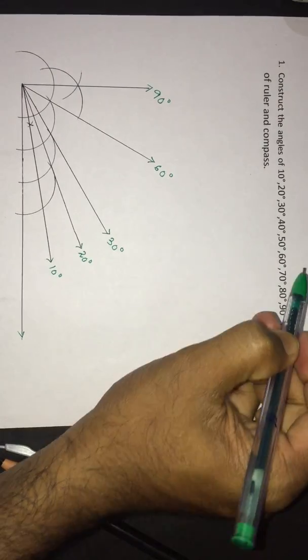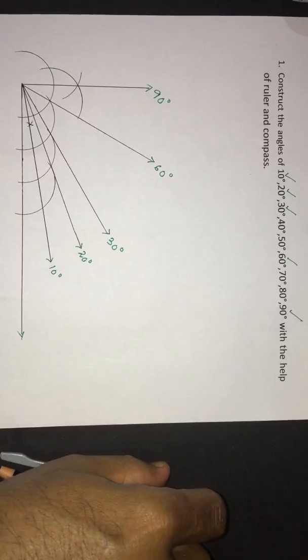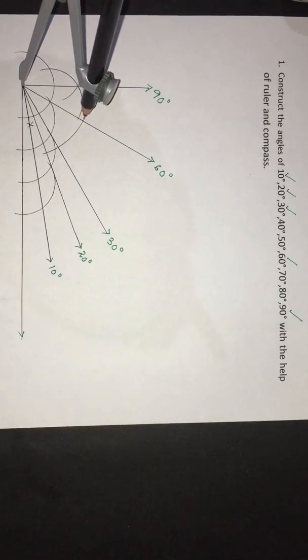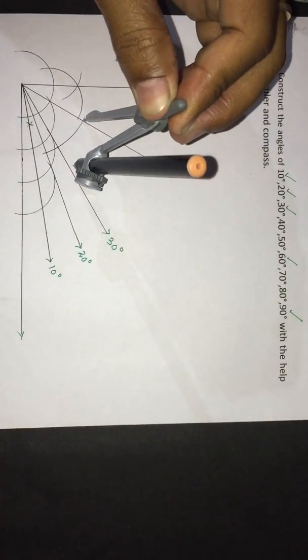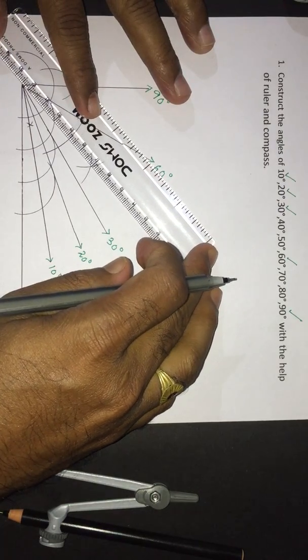So we have drawn 90, 60, 30, 20, and 10 degrees. Now we'll go for angle 40 degrees. To find angle 40 degrees, we will divide the region between angles 20 and 60 degrees, because within these two angles, 40 degrees lies in between. If we join the intersecting points from this bisection, we shall get angle 40 degrees.